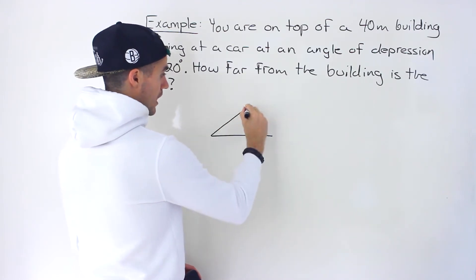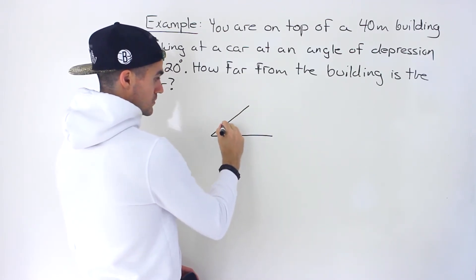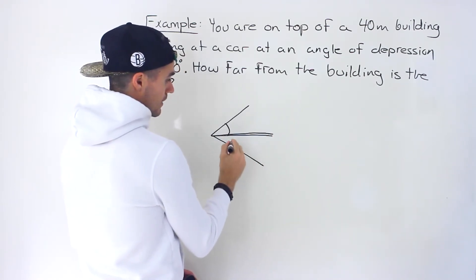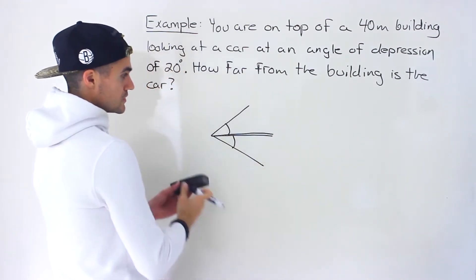So looking up from the horizontal, this would be here an angle of elevation, or at this horizontal, if you're looking down, this would be the angle of depression.